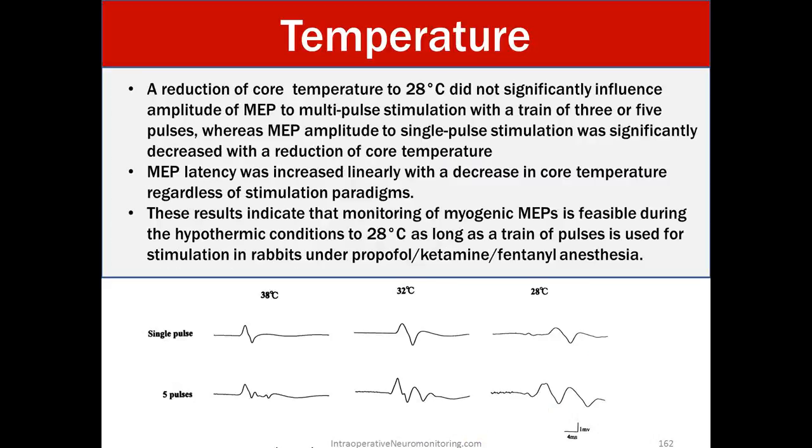Temperature. A reduction of core temperature to 28 degrees Celsius did not significantly influence amplitudes of MEPs to multi-pulse stimulation with a train of three or five pulses, whereas MEP amplitude to single-pulse stimulation was significantly decreased with a reduction of core temperature. MEP latency was increased linearly with a decrease in core temperature regardless of stimulation paradigms. These results indicate that monitoring of myogenic MEP is feasible during the hypothermic condition to 28 degrees Celsius as long as the train of pulses is used for stimulation in rabbits under propofol-ketamine-fentanyl anesthesia. So again, this is animal studies, something we can easily kind of assume or adopt into the adult world as well.